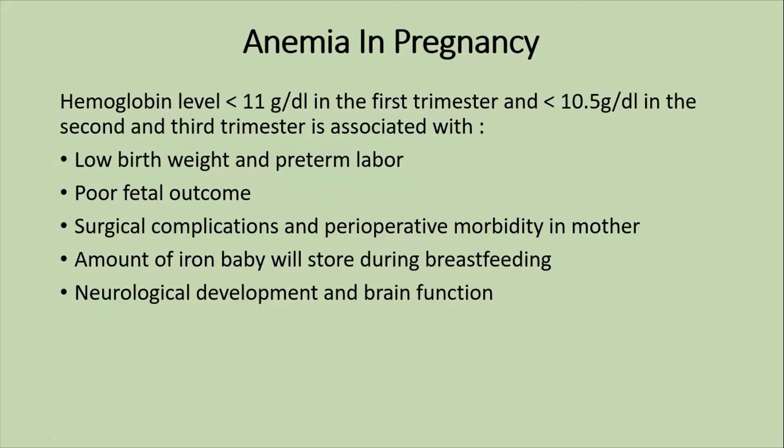In pregnancy, a hemoglobin level of less than 11 grams per deciliter in the first trimester, or less than 10.5 grams per deciliter in the second and third trimester, is classified as anemia. Complications include low birth weight, preterm labor, poor physical outcomes, surgical complications, perioperative morbidity in the mother, excessive blood loss, and decreased iron stores for the baby during breastfeeding.